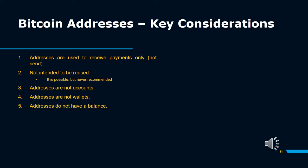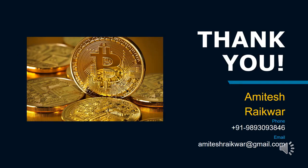Bitcoin addresses are only meant to be used once. The idea is that for each Bitcoin transaction, receivers will generate a unique, single-use address to provide senders. 2. Not intended to be reused — it is possible, but never recommended. 3. You can't return to sender: one curious aspect of Bitcoin is it doesn't actually track from where transactions are sent. Unlike a typical letter which includes a return address, Bitcoin transactions do not. 4. Addresses are not accounts. 5. Addresses are not wallets. 6. Addresses do not have a balance.